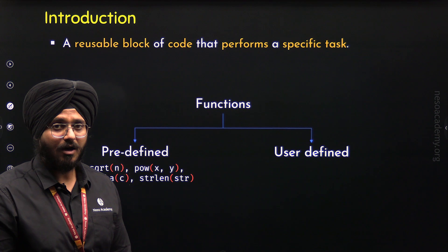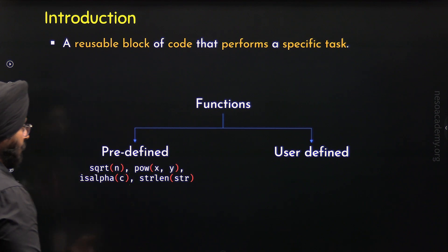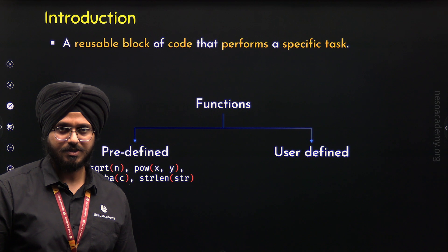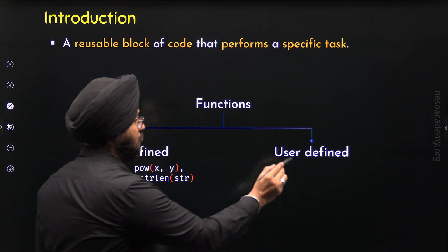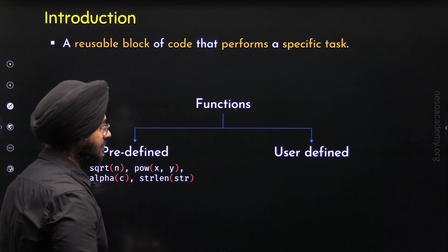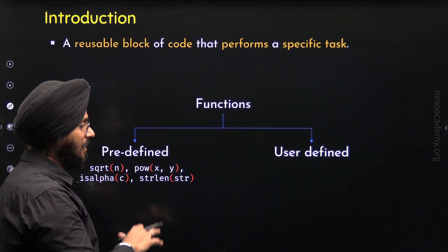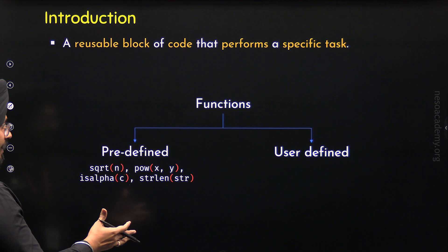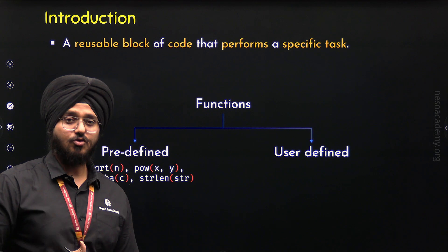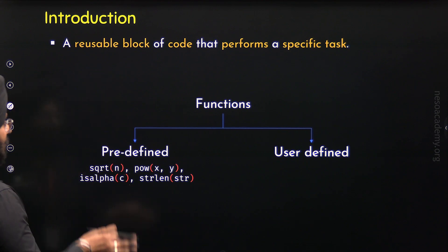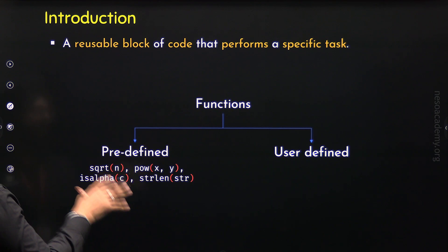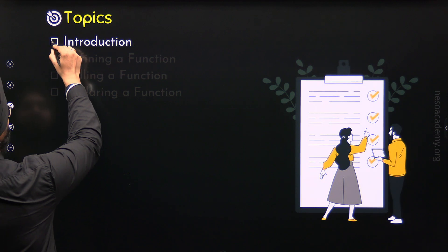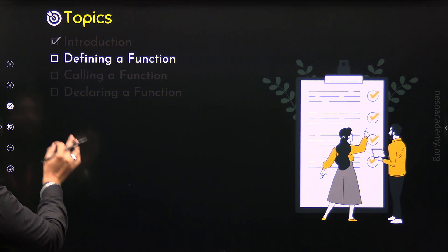But what if we want to define our own functions? We may want to do this because we do not have any predefined function for the job we want to do. In this case, we define our own functions. These are called user-defined functions. As the name suggests, these functions are defined by the user or programmer. The focus of this lecture is to understand how to define our own functions and how to use them. So in the subsequent topics, we will properly understand how to define and use our own functions. With this, we are done with the introduction to functions.